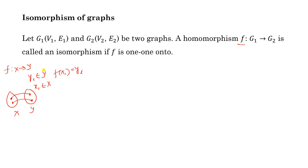If we combine these two definitions — one-to-one and onto — then we say the mapping f is one-to-one onto. So for isomorphism, in addition to being a homomorphism, the mapping f must also be one-to-one and onto.